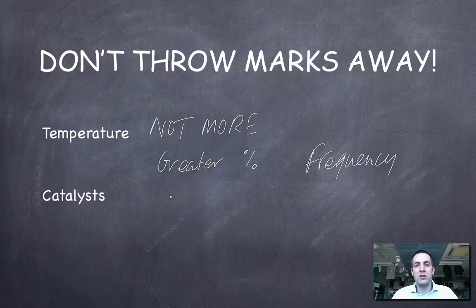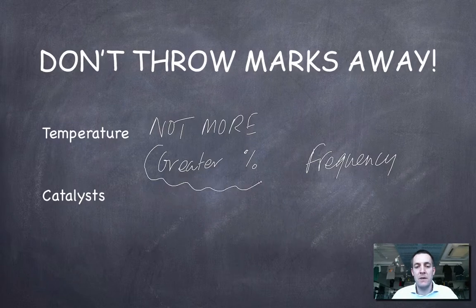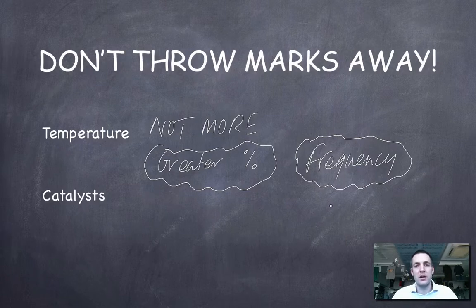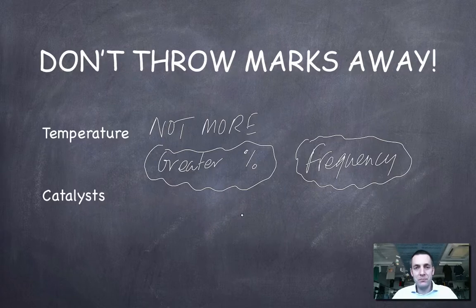With catalysts, it's also not about more particles having enough energy to react in isolation. Because the activation energy was lowered by the catalyst providing a different route, a greater percentage of particles now have enough energy to react or exceed the activation energy. Therefore the frequency of successful collisions increases — not just more successful collisions, but more successful collisions per second or per unit time. Make sure you're precise with your wording if you don't want to throw away marks.